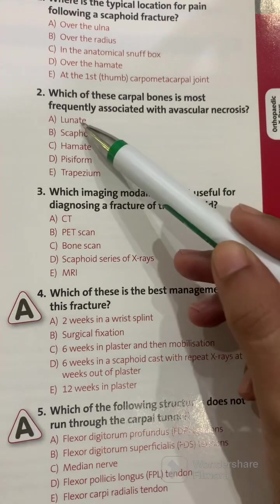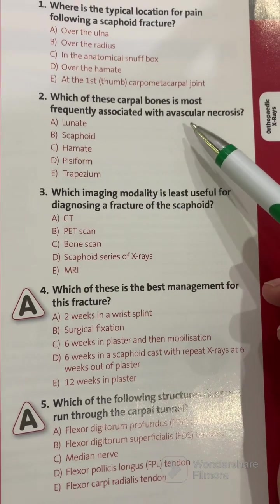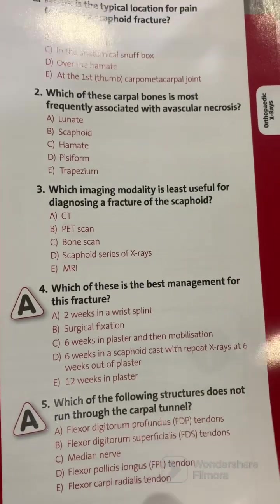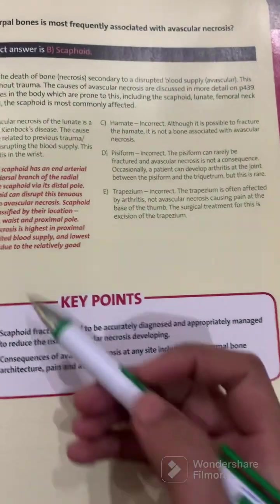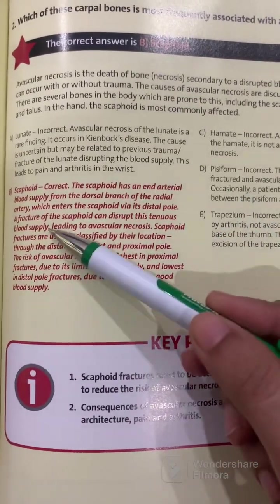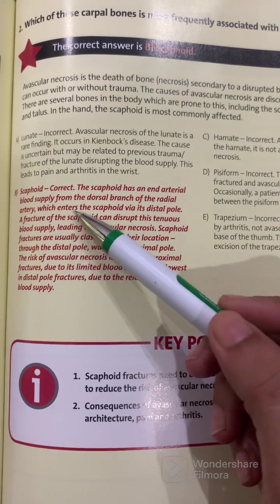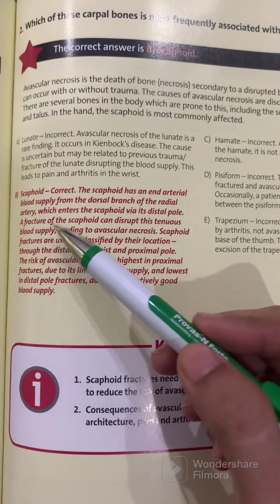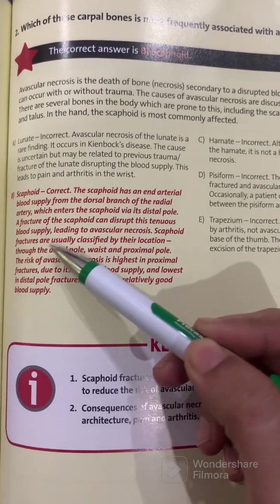Question two: which of these carpal bones is most frequently associated with avascular necrosis? The answer is the scaphoid. The scaphoid has an end-arterial blood supply from the dorsal branch of the radial artery, which enters the scaphoid via its distal pole. Therefore, a fracture of the scaphoid can disrupt this blood supply, leading to avascular necrosis.